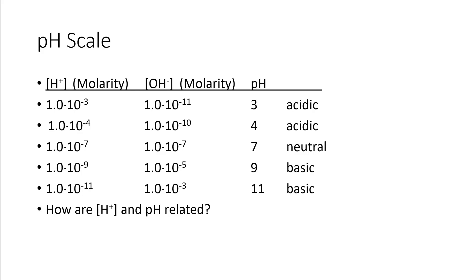In row four, the hydrogen ion concentration is equal to 1.0 × 10⁻⁹, the hydroxide ion concentration is equal to 1.0 × 10⁻⁵, the pH is equal to 9, and the solution is basic. In row five, the hydrogen ion concentration is equal to 1.0 × 10⁻¹¹, the hydroxide ion concentration is equal to 1.0 × 10⁻³, the pH is 11, and the solution is basic.